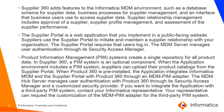The Supplier Portal is a web application implemented on a public-facing website. Suppliers use it to initiate and maintain a supplier relationship with the organization. The supplier portal requires user login, and the MDM server manages user authentication through a Security Access Manager. PIM integration is optional — you can choose whether or not to integrate PIM with Supplier 360 — but if you want to view the products supplied by suppliers, you will need it. For any third-party PIM system, you need to contact GCS so that the MDM-PIM adapter can be configured for your specific third-party application.